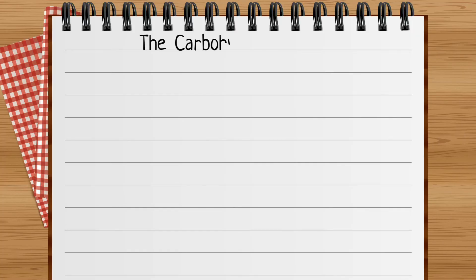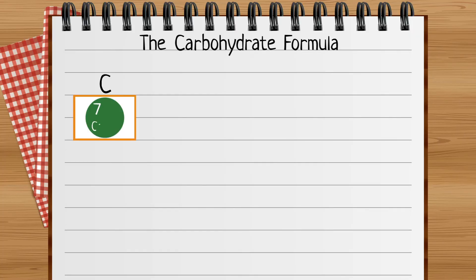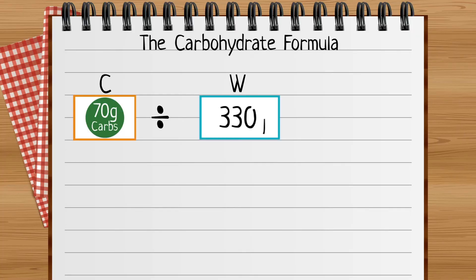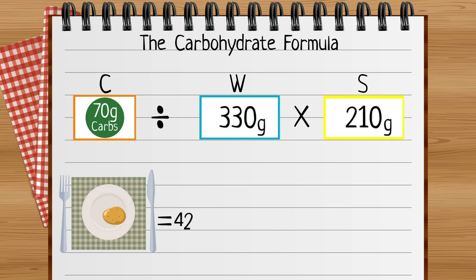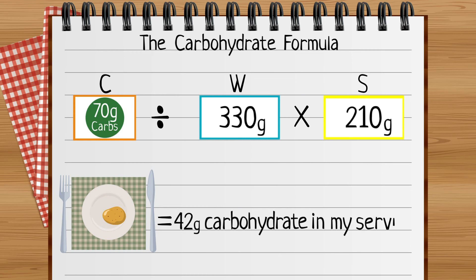So the calculation is C divided by W multiplied by S, which gives me the carbohydrate in my serving of food.